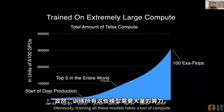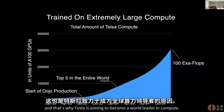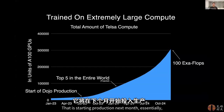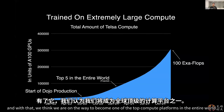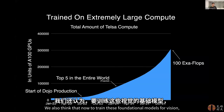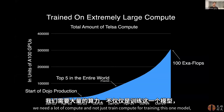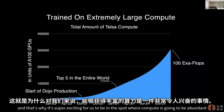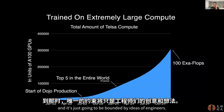Training all these models takes a ton of compute, and that's why Tesla is aiming to become a world leader in compute. Dojo is our training hardware, custom-built at Tesla, starting production next month. With that, we think we are on the way to become one of the top compute platforms in the entire world. In order to train these foundational models for vision, we need a lot of compute — not just to train one model, but to try a lot of different experiments to see which models actually work well. It's super exciting that compute is going to be abundant and gated only by the ideas of engineers.